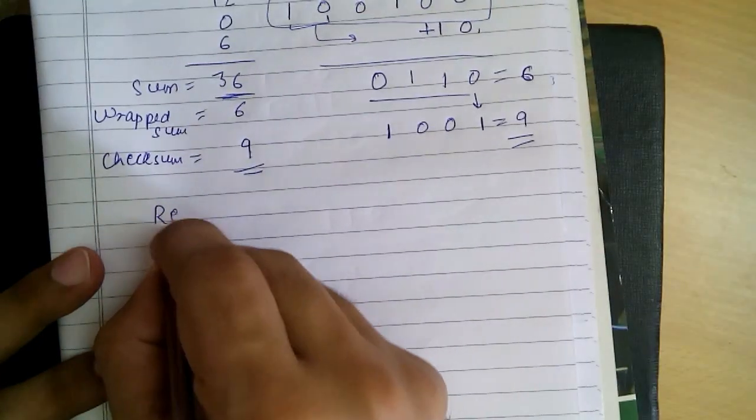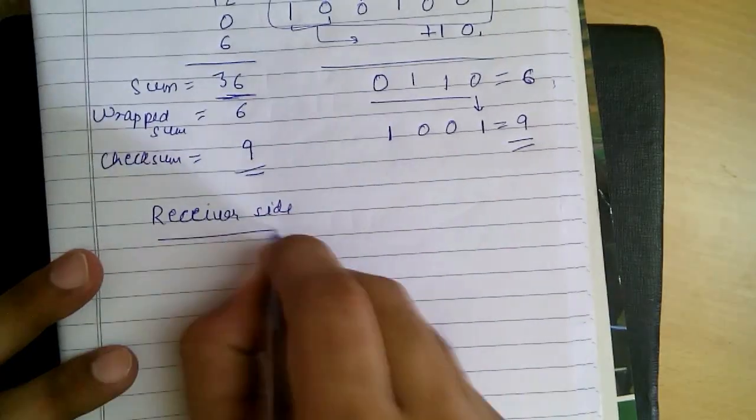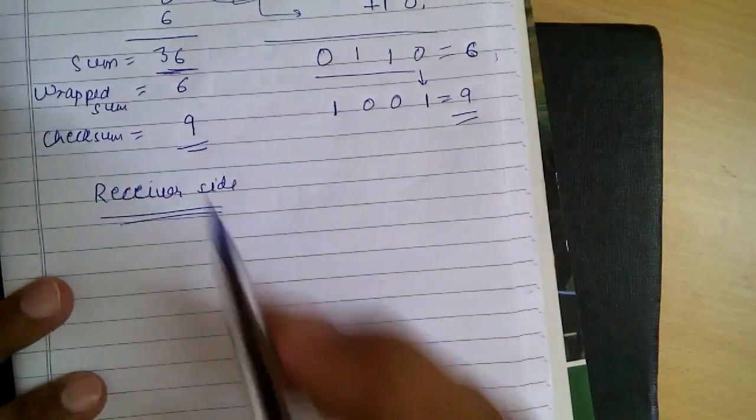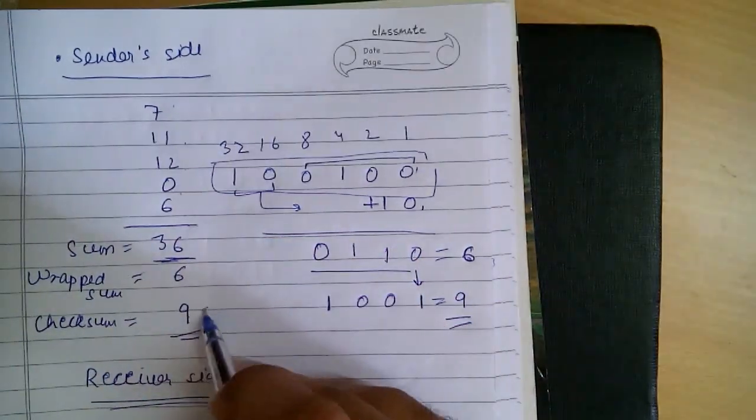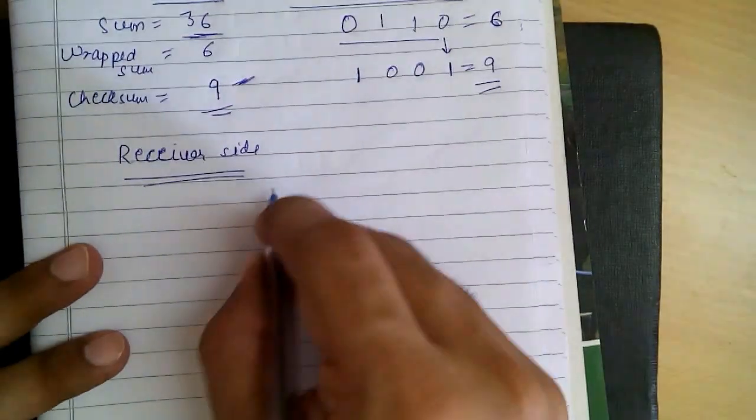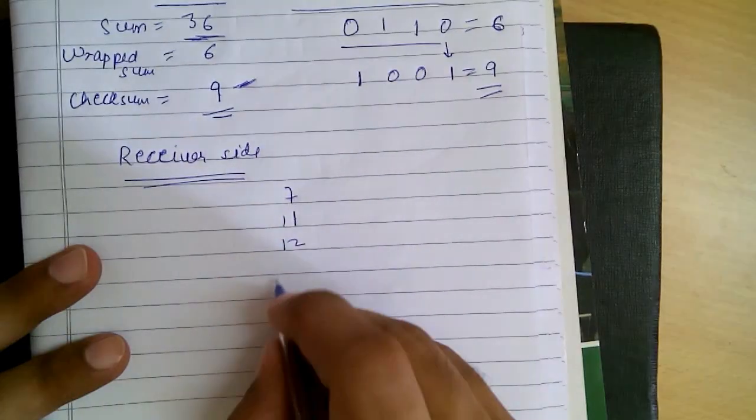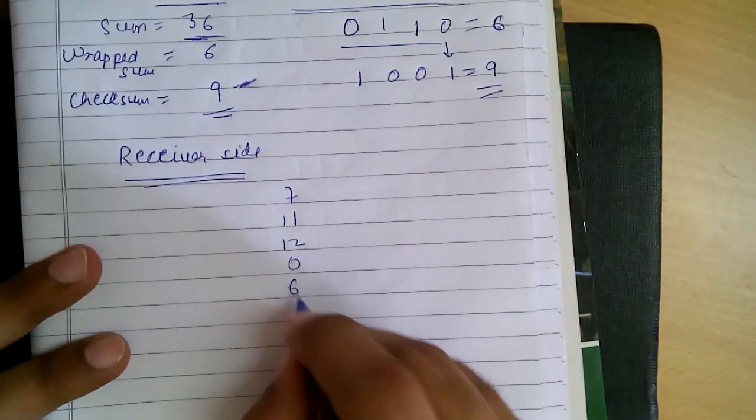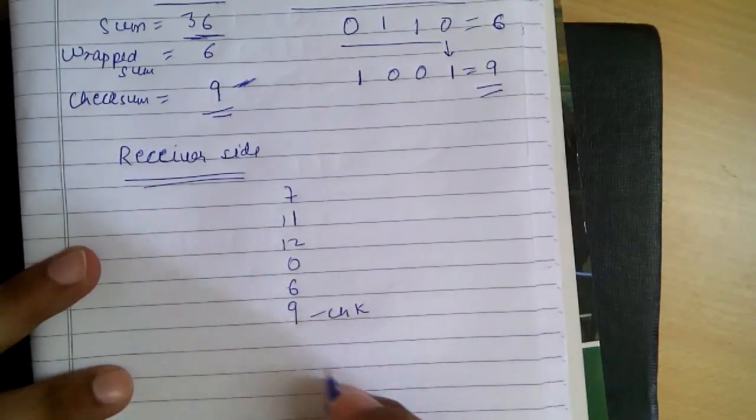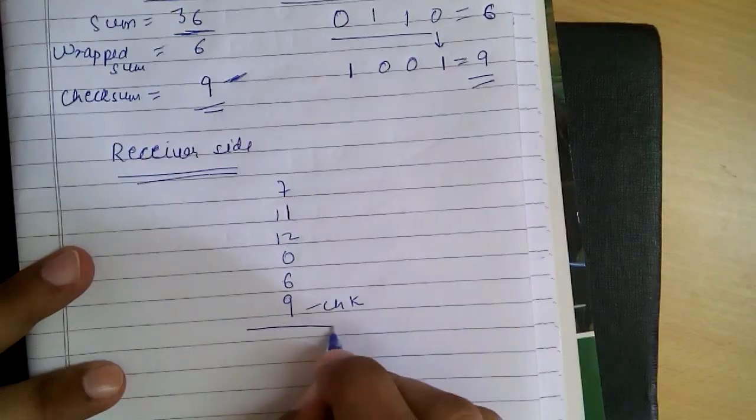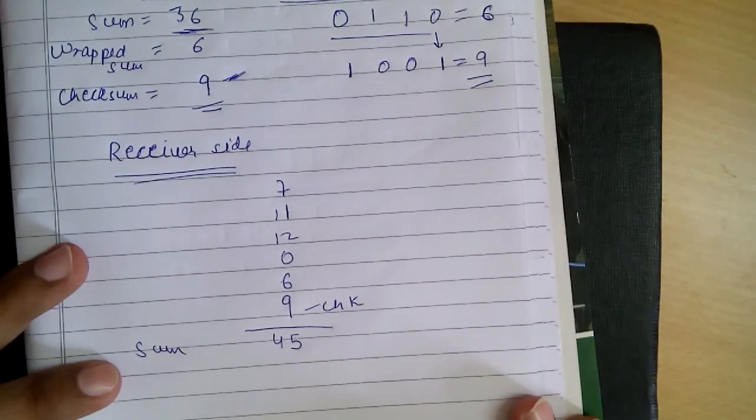Now on the receiver side. The receiver received these data bits plus the checksum. The receiver has 7, 11, 12, 0, 6, and the checksum 9. The receiver does the same - finds the sum. That is 45.